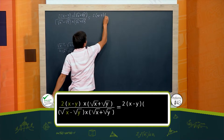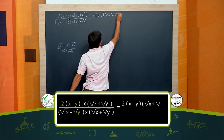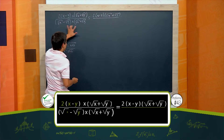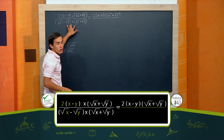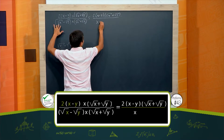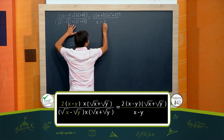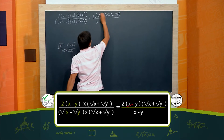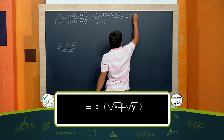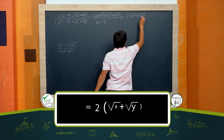2 por x menos y por raíz de x más raíz de y sobre... y este es la solución de una diferencia de cuadrados, lo cual me da el primero al cuadrado, que es x, y el segundo al cuadrado, que es y. De donde puedo cancelar x menos y, me queda que esto es 2 raíz de x más raíz de y.